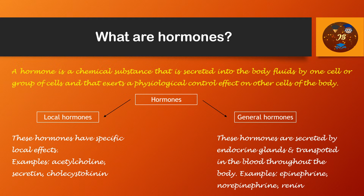Now we need to know what hormones are — we can call them the unit of the endocrine system. A hormone is a chemical substance that is secreted into the body fluids by one cell or a group of cells, which controls the physiological activities of our body. There are two types of hormones according to their activity: local hormones and general hormones.